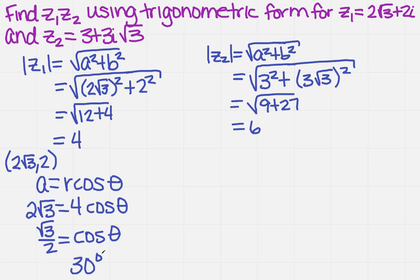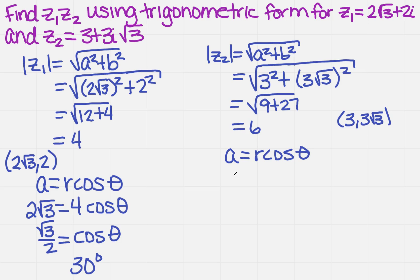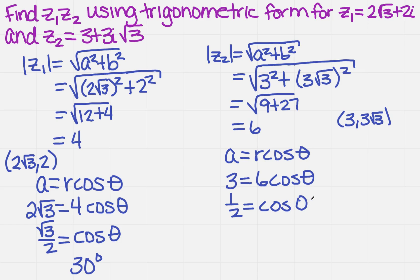Over here for Z2, I do the same kind of thing. My point is (a, b), so I need to do a equals r cosine theta, which tells me 3 equals 6 cosine theta. So I get 1 half equals cosine of theta. And what angle gives me 1 half? That's 60 degrees.